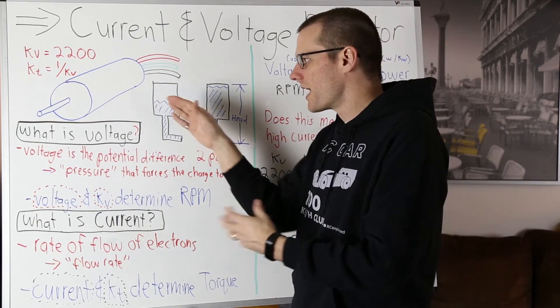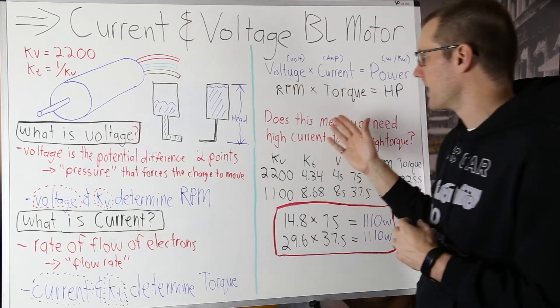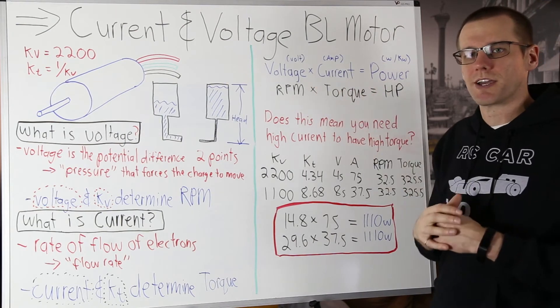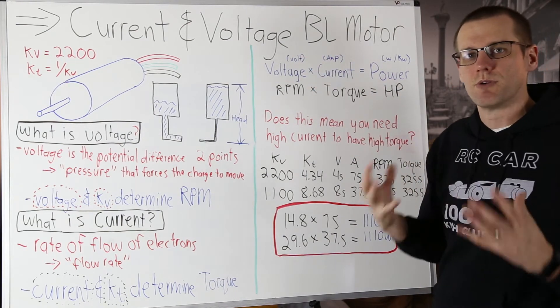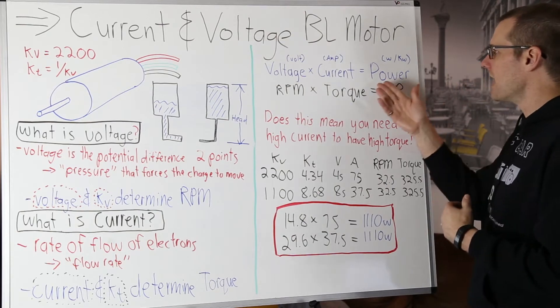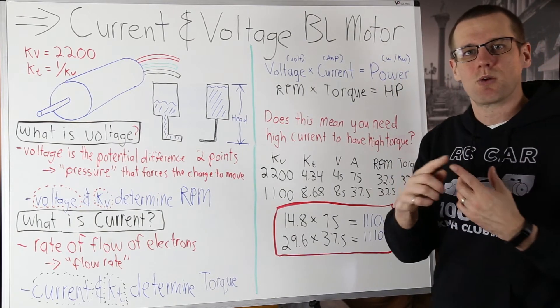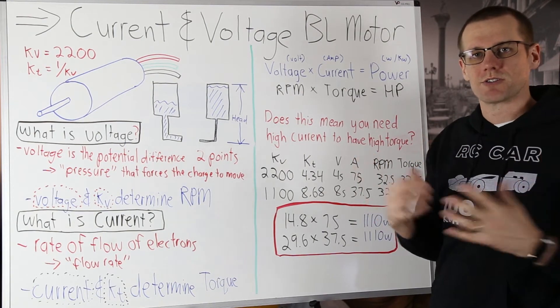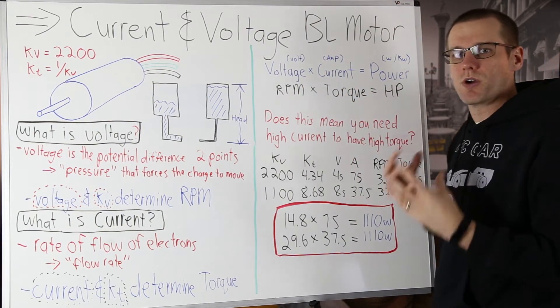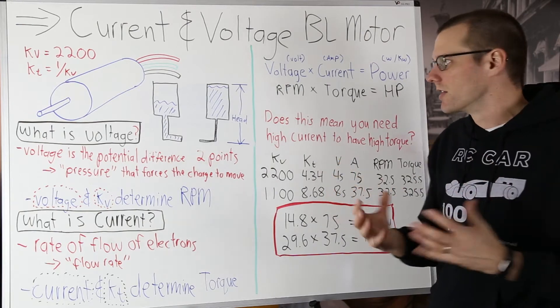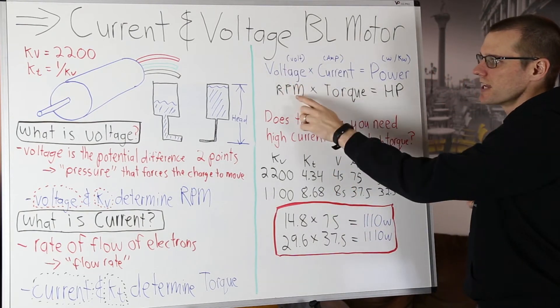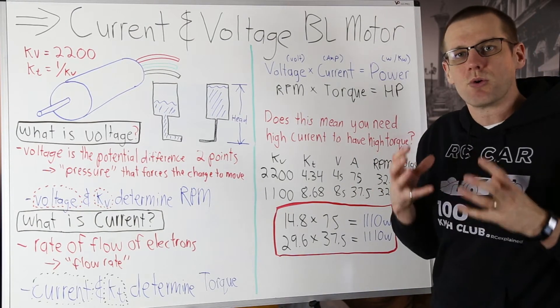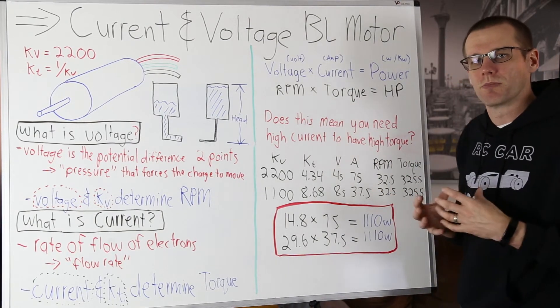Now let's take a look at what happens when we combine voltage and current on the right hand side of the board. Now if we go and take voltage and we multiply it by current where voltage is measured in volts and current is measured in amps we get power which can also be measured in watts or kilowatts where one kilowatt is equal to a thousand watts. If we take a look at exactly what this is equivalent to in something that we're more familiar with this is essentially saying that rpm multiplied by torque is equivalent to horsepower.